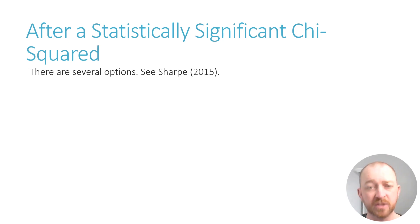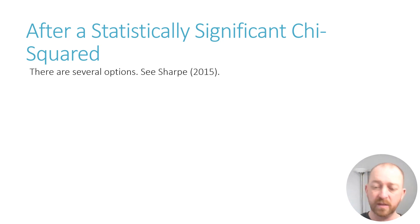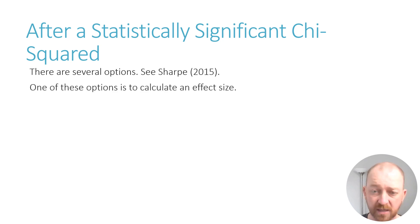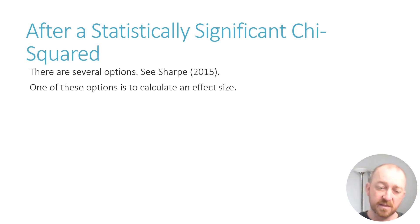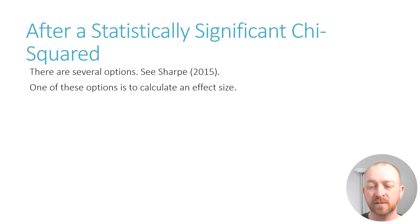For a much more thorough explanation of that I recommend reading Sharpe's article. It's actually fairly straightforward and I'll provide the full reference in the description of the video. Anyway, so once we have that, we could for example calculate a measure of effect size. A measure of effect size tells us not only is it statistically significant, but what is the magnitude of the impact of variable A on variable B — some people refer to that as the practical significance.